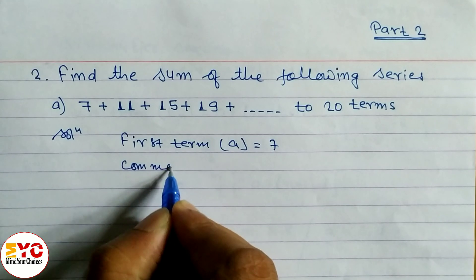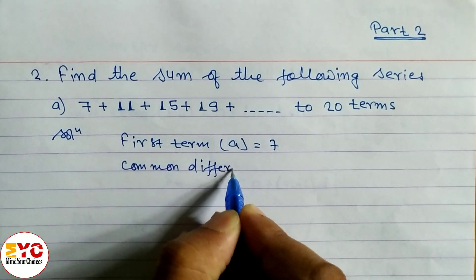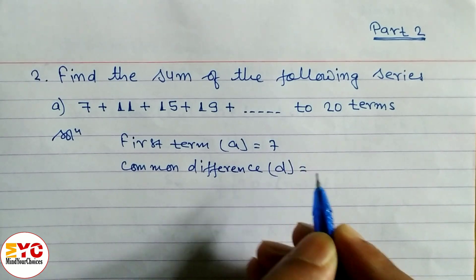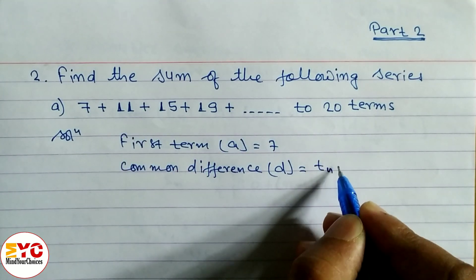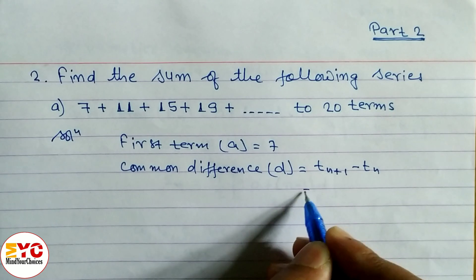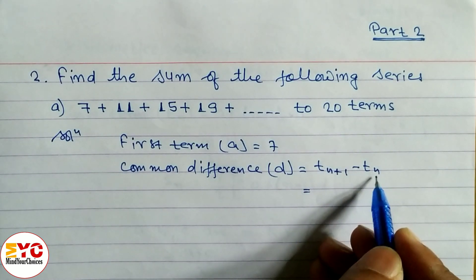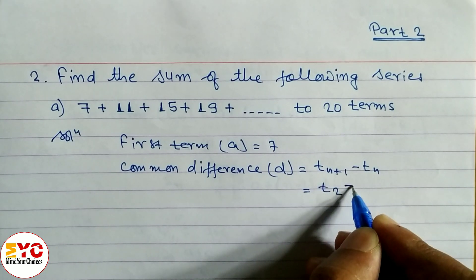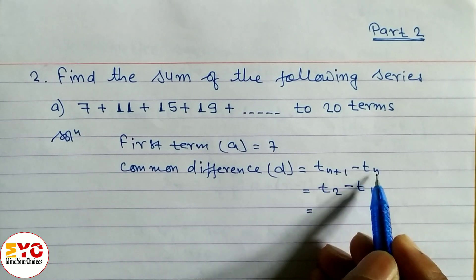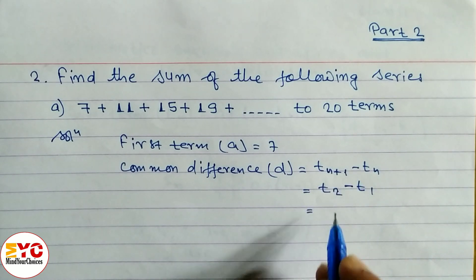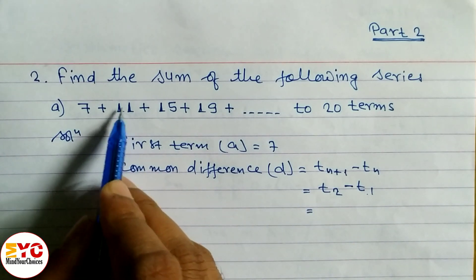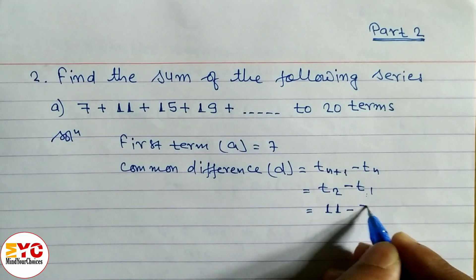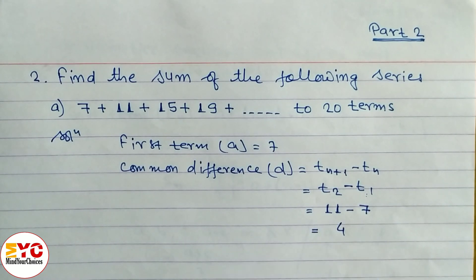Now we have to find the common difference. Common difference d is equal to the second term minus the first term — the formula is t(n+1) minus t(n). So t2 minus t1: t2 is 11, minus t1 which is 7, gives us d equal to 4.